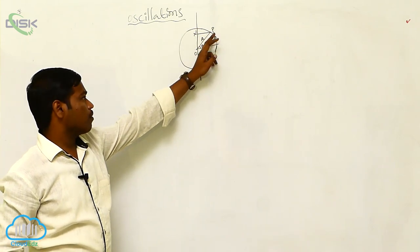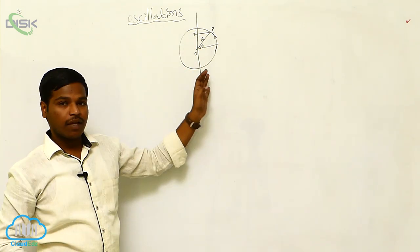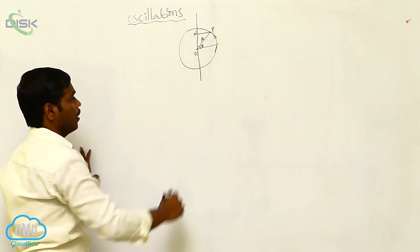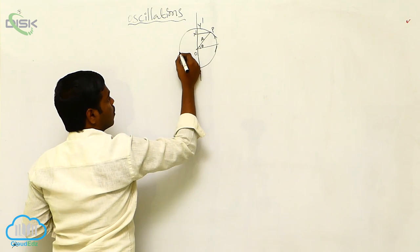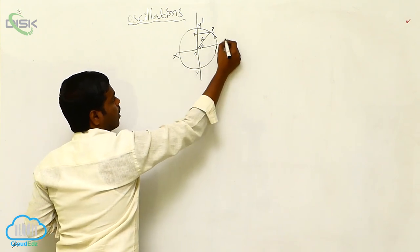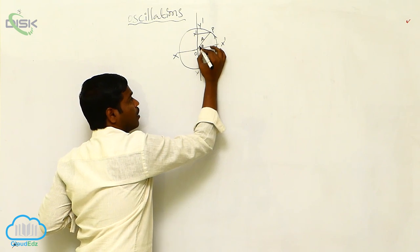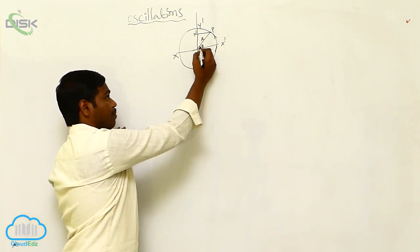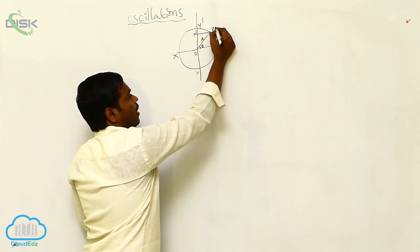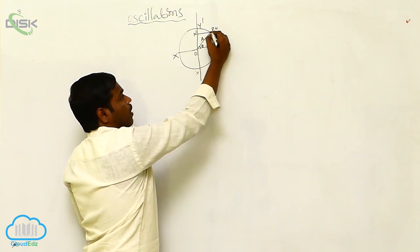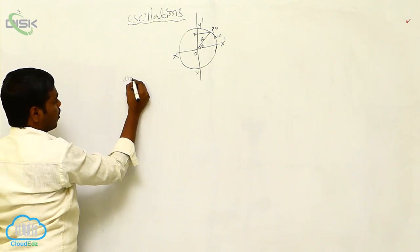The projection of a particle on the diameter of circular motion is a simple harmonic motion. We will discuss some characteristics of simple harmonic motion. Here, PN is the projection on diameter YY dash, and XX dash is the diameter. From the diagram, this is the displacement of the particle, the angle is theta, and the particle is moving with angular velocity omega. We have to calculate the displacement of the particle.